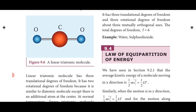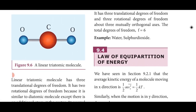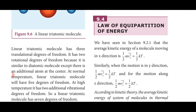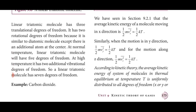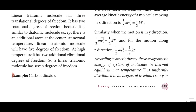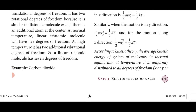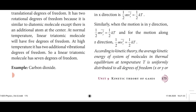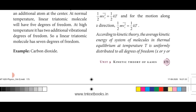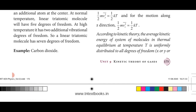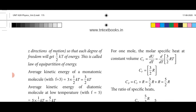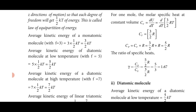To summarize: degrees of freedom is the minimum number of coordinates to specify the position and configuration of a thermodynamical system. Now, the Law of Equipartition of Energy states that according to kinetic theory, the average kinetic energy of a system of molecules in thermal equilibrium at temperature T is uniformly distributed to all degrees of freedom — each degree of freedom gets ½kT energy.